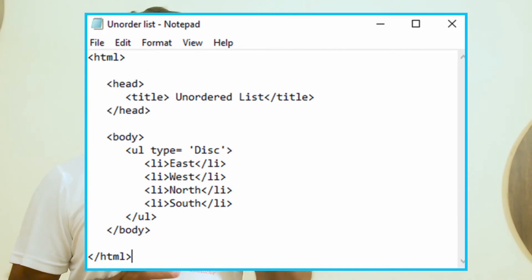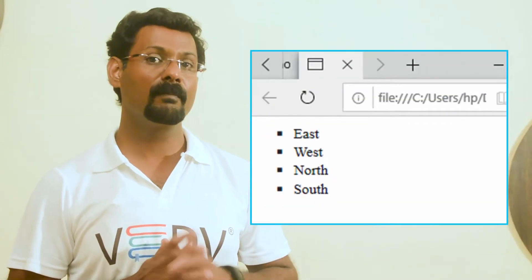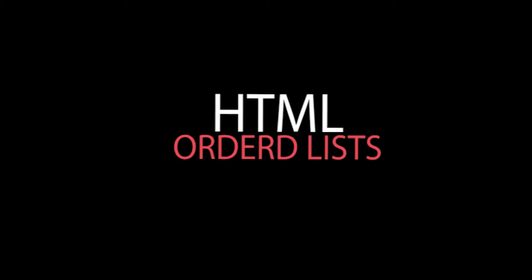An HTML program for an unordered list of type square and its output is shown. HTML ordered list: if you want to put items in a numbered list instead of bullets, the HTML ordered list is used. This list is created using ordered list tags, and the numbering starts at one and increments by one for each successive list element.